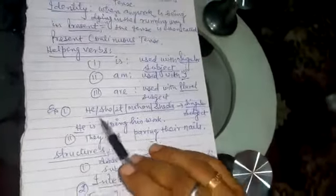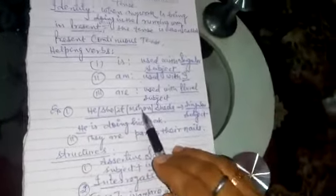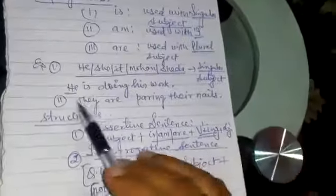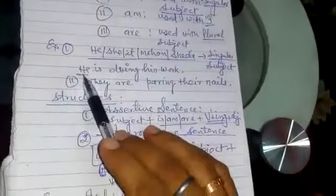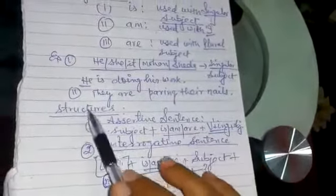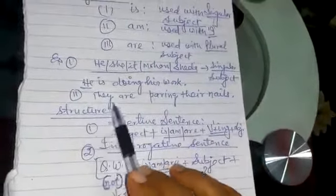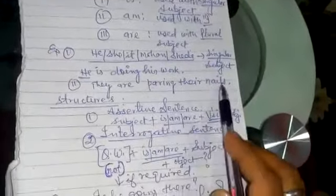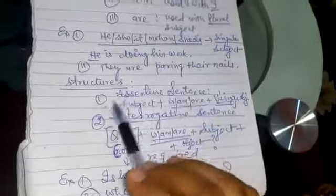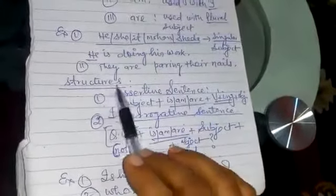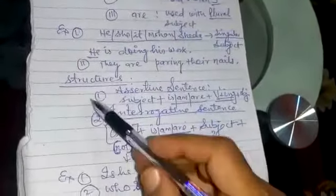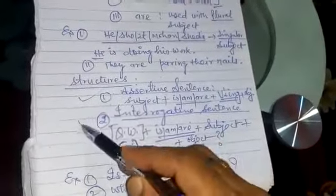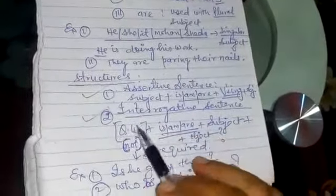For example: 'He is doing his work' — here 'he' is a singular subject. 'They are pairing their nails' — plural subject. Now let's look at the structures. First is the assertive sentence, and second is the interrogative sentence.